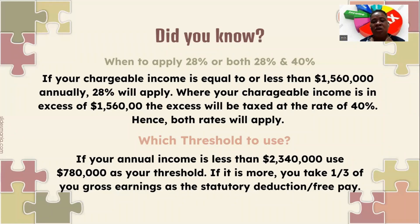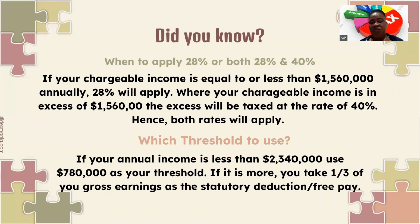To determine which threshold applies, look at your annual income. If your annual income is less than $2,340,000, you use $780,000 as your threshold. If it is more, you take one-third of your income as your threshold. This is also referred to as the statutory deduction, because the law states what you're entitled to as your free pay — either $780,000 or one-third of your gross earnings for the year.